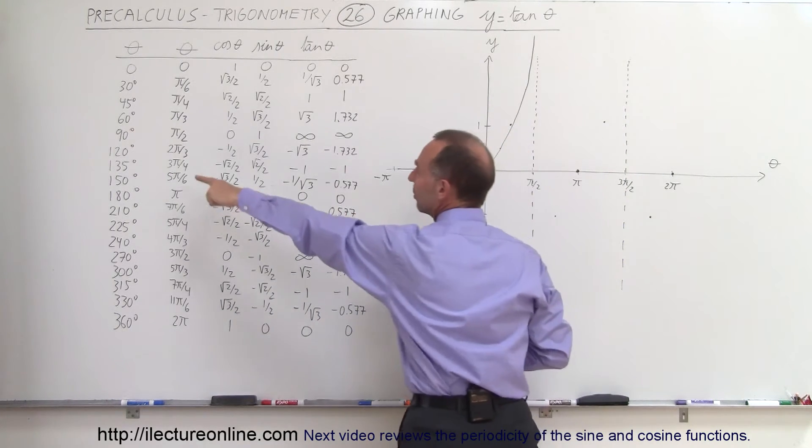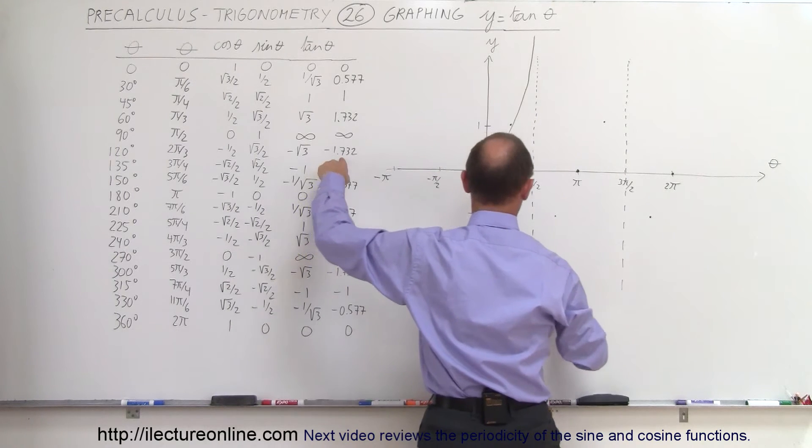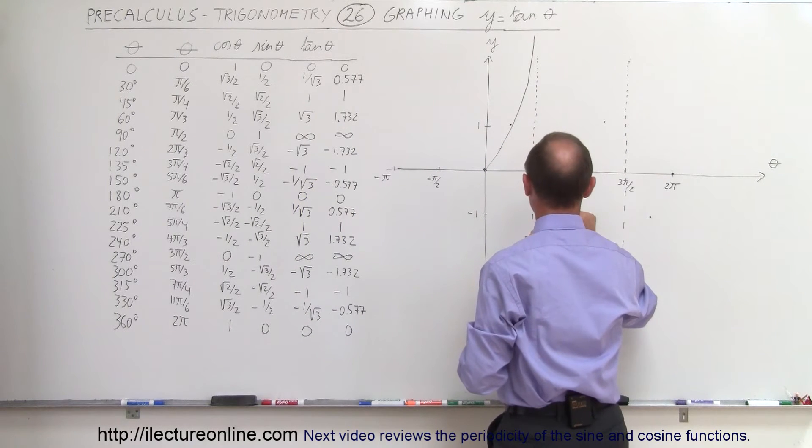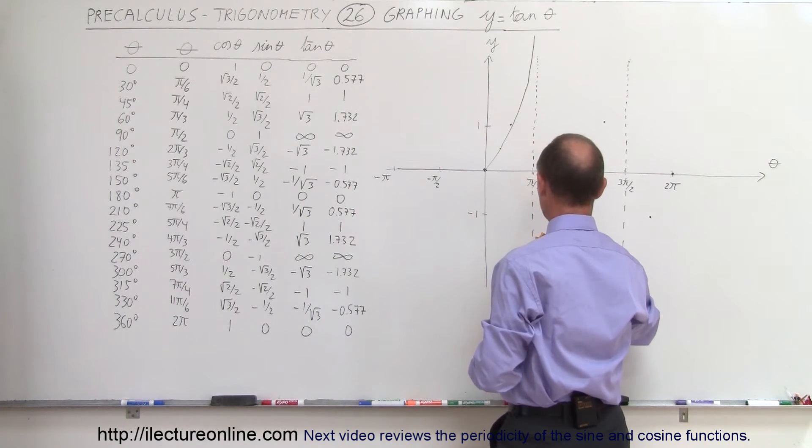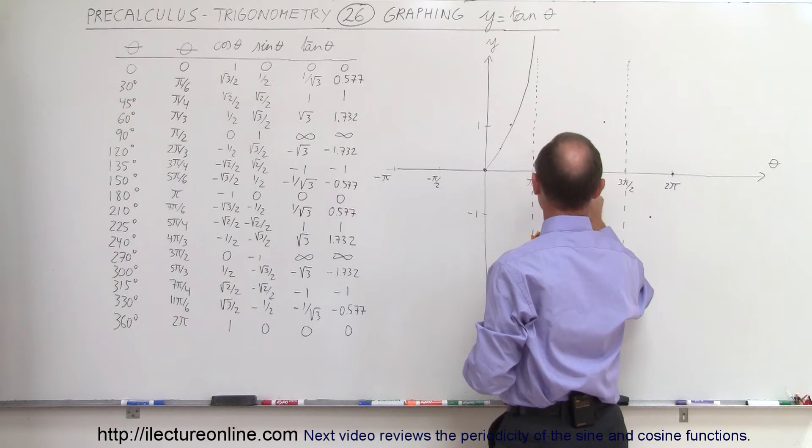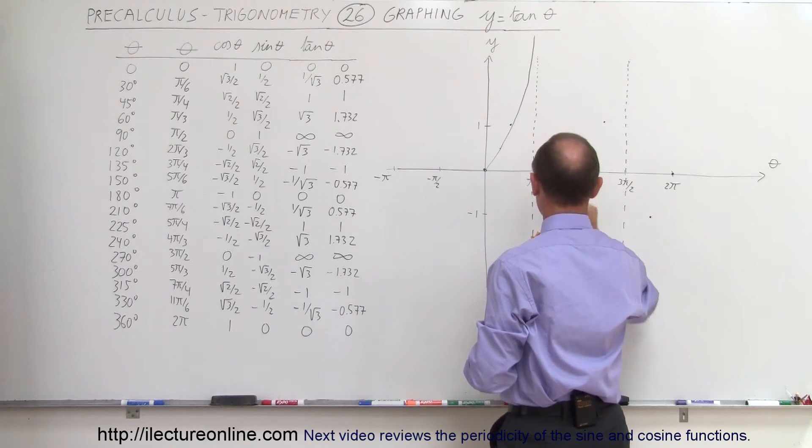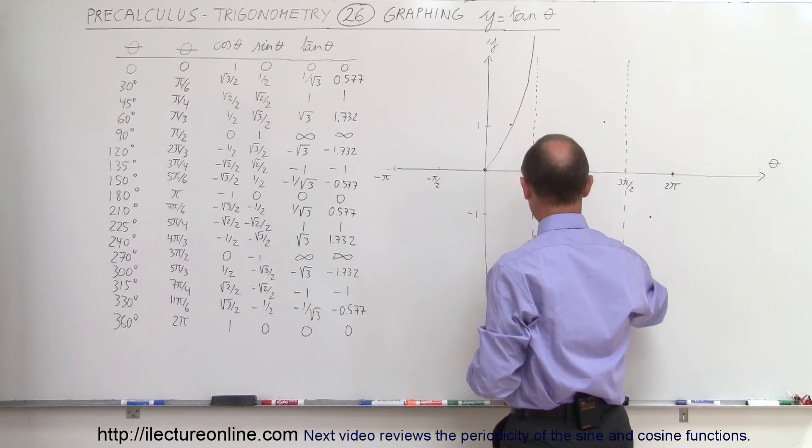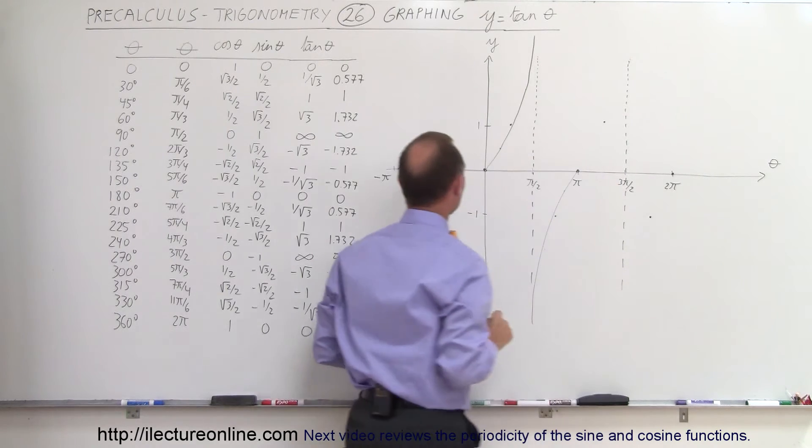Past 90 degrees, we're at negative values. So that means that we're negative 1 here, negative 1.7 over here, and negative 0.5 over there. So that way we have a curve that looks like this.